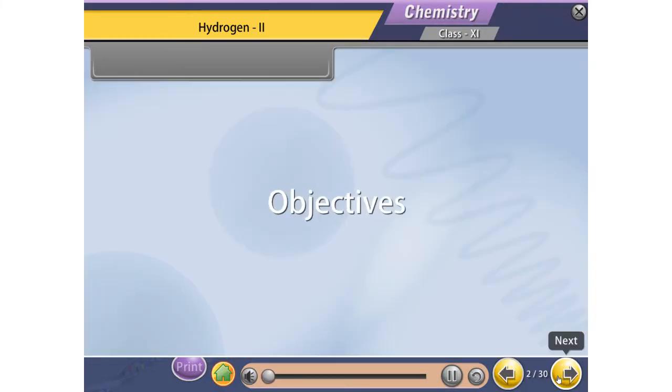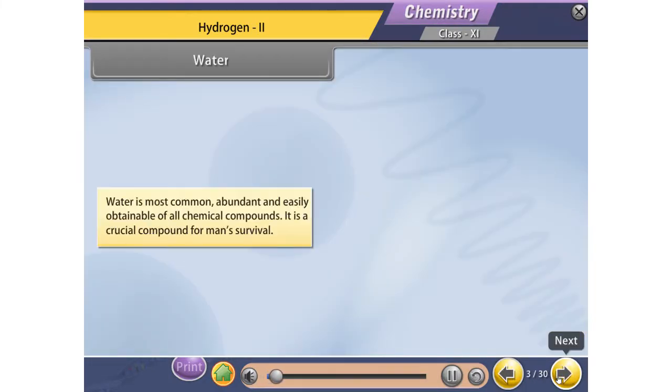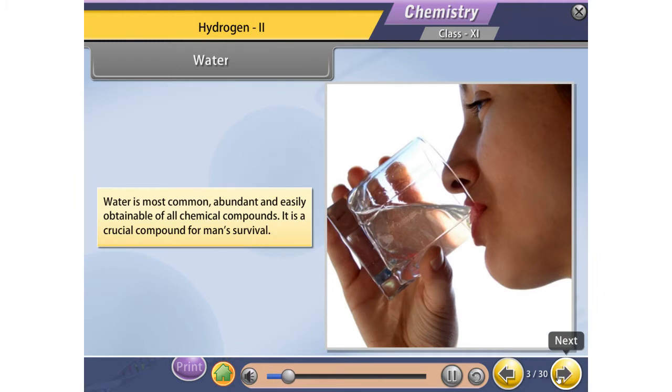Water is most common, abundant and easily obtainable of all chemical compounds. It is a crucial compound for man's survival.